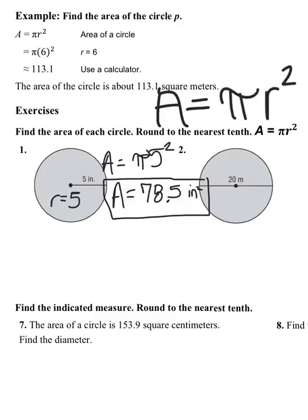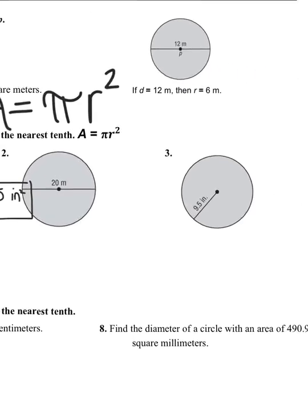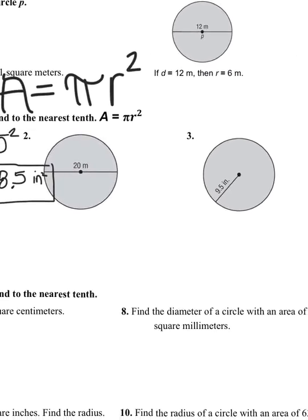Question number two, this time they didn't give us the radius, they gave us the diameter. So the first thing we need to do is say, if I have the diameter, how do I get to the radius? Well, radius equals diameter divided by 2.